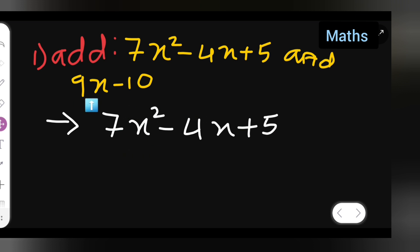After this, there is 9x. The x² value is not there, so 9x will come under the 4x. Write down 9x, and -10 will come under this. Now what is going to happen is you'll have to add these numbers.